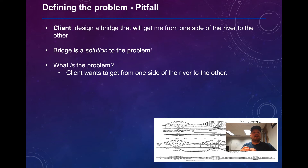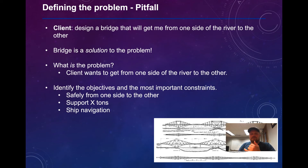Are there alternate solutions to a bridge? Of course there are. You could take a boat, build a catapult, or use a hot air balloon to cross from one side to the other. We want to identify the objectives: safely crossing from one side to the other, and perhaps supporting a certain amount of weight — say 10 tons — which would rule out a hot air balloon. If running a ferry, does that impact ships going up and down the river? These are objectives to identify as part of the problem. Maybe you can think of other solutions and leave them in the comments below.